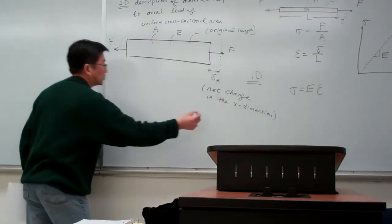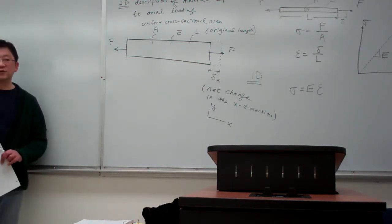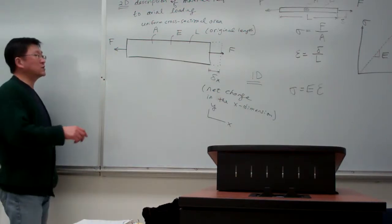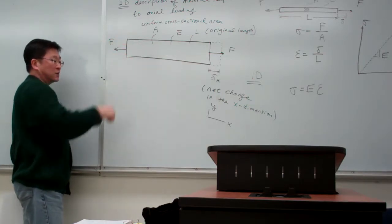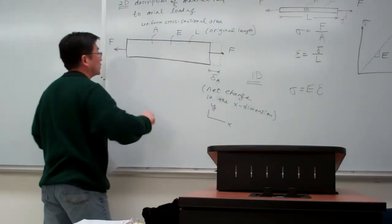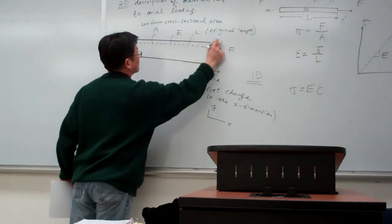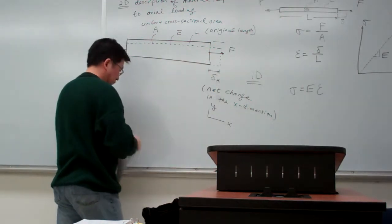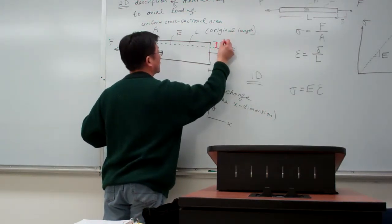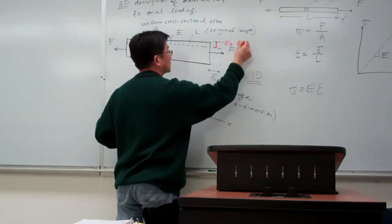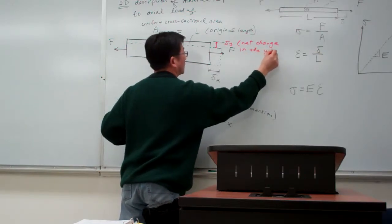Let me pick up the x and y directions. Because we are considering a two-dimensional description, we expect the material to also undergo deformation in the lateral direction — that is, in the y-direction. So this material will deform laterally, and we call this delta y, which is the net change in the y-dimension.